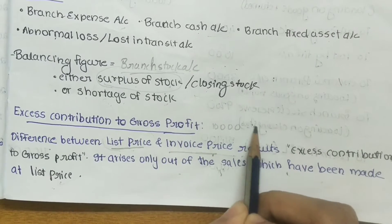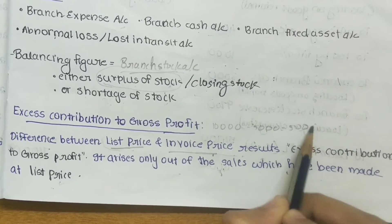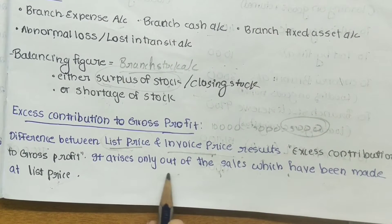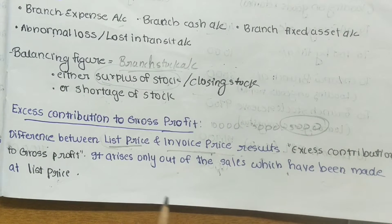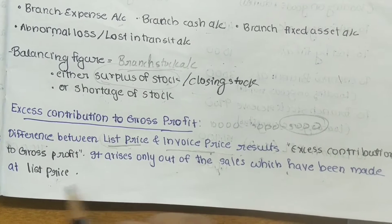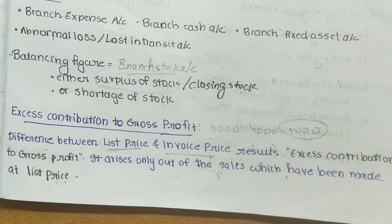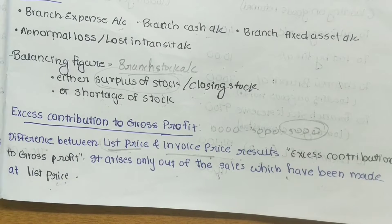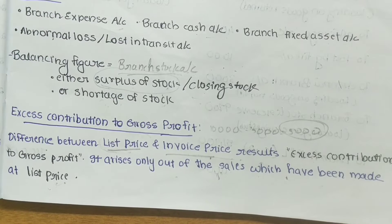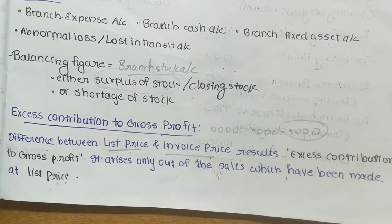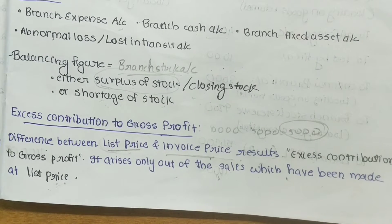This excess contribution to gross profit arises only from sales made at list price. In the 2016 syllabus Branch and Departmental Accounts, the third illustration includes catalog price and invoice price — you can refer there. When such questions appear, keep this concept in mind if you are doing it under the Stock and Debtors Method.